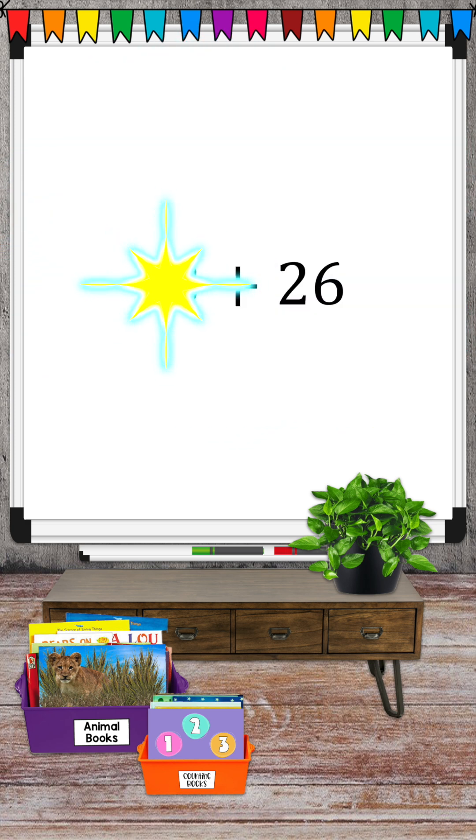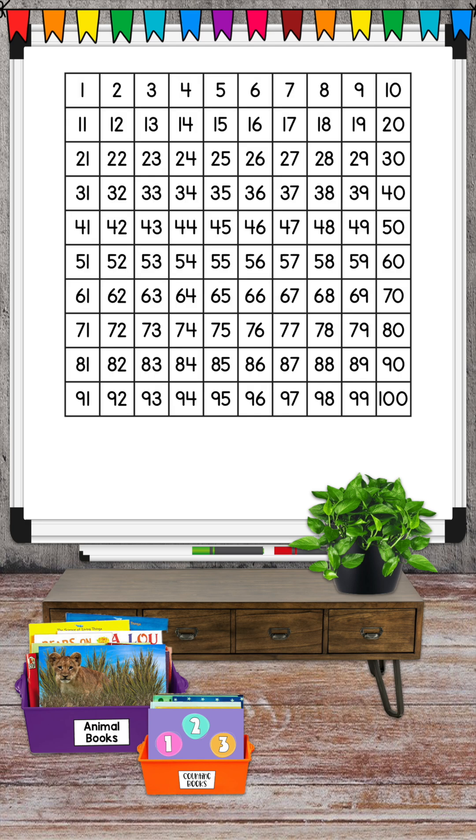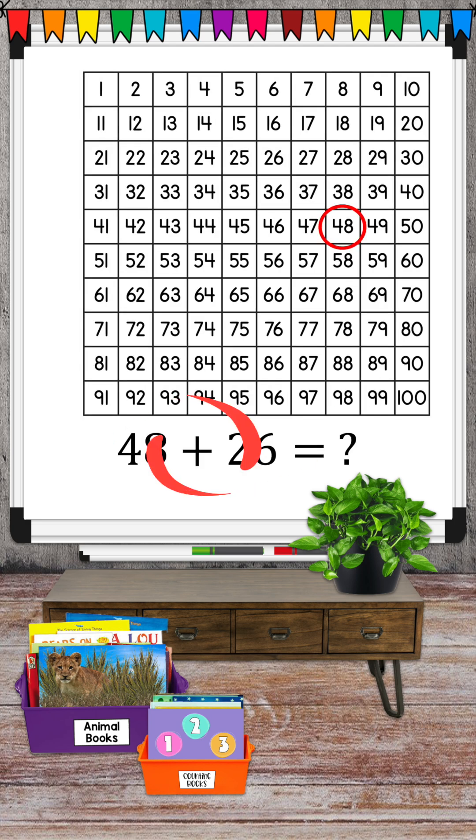We're going to add 48 plus 26. 48 plus 26 equals what? First, we find 48 on the hundreds chart. Since we're adding, we will move to the right and down.